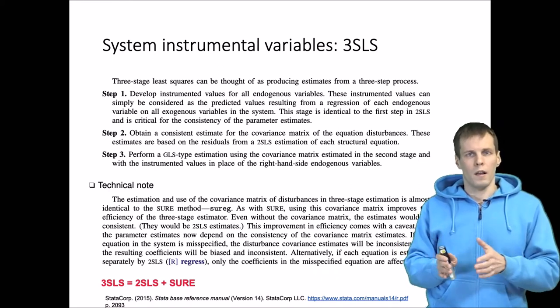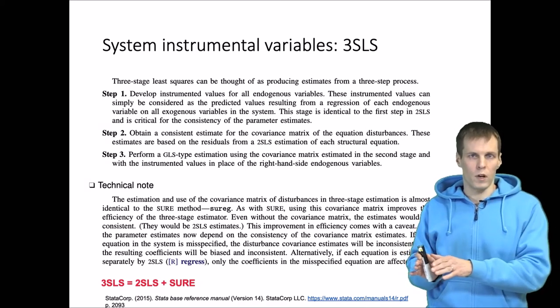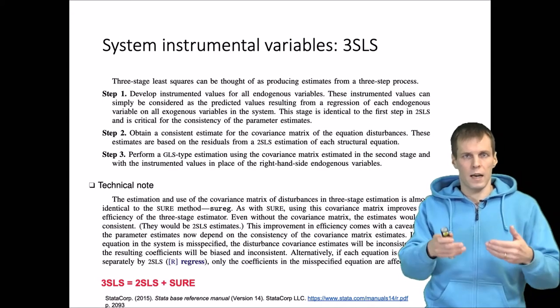Instead of using OLS regression for calculating the initial covariance matrix like we normally do in seemingly unrelated regression, here we use two-stage least squares. So we just add a third step.